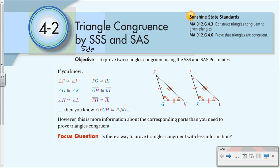So this is triangle congruence by side-side-side and side-angle-side. Anytime you see an S, it's side. Anytime you see an A, it's angle.